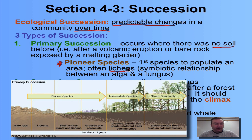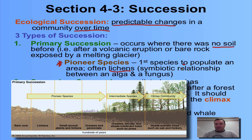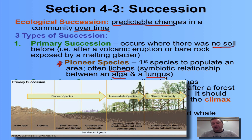Lichens are really cool — they represent a mutualistic symbiotic relationship. Go back to chapter 4 part 5 if you want more detail on symbiosis, but remember that a lichen is a mutualistic symbiotic relationship between an alga and a fungus. The fungus absorbs nutrients from the rock, and the alga does photosynthesis to provide food for both, while the nutrients from the fungus help the alga along.